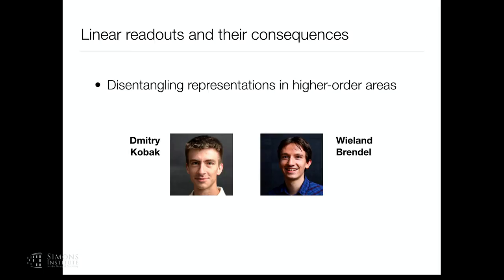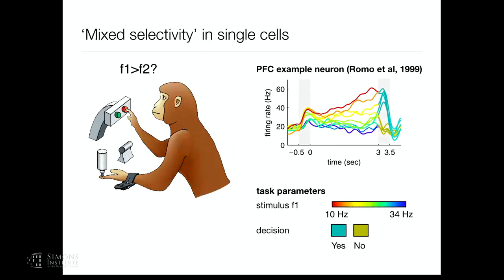Let's start with disentangling representations in higher order areas — work mostly done with former postdoc Dimitri Kobak and graduate student Wieland Brendel. The problem we started out with, more than 10 years ago: you have a recording from a monkey's prefrontal cortex, an executive area where working memory, sensory information, and action selection come together. The monkey gets a vibratory stimulus frequency F1 on its fingertip, then a three-second delay, then a second stimulus F2, and must decide whether F1 is larger than F2. It's a simple working memory task.